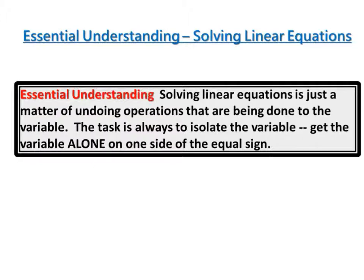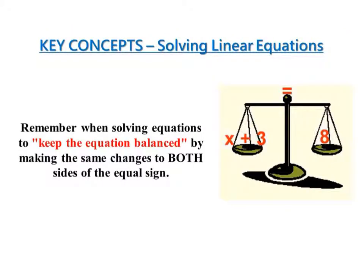What you should understand is that solving linear equations is just a matter of undoing the operations that are being done to the variable. The task is always to isolate the variable, which means to get it alone on one side of the equal sign and a number on the other. Remember when solving equations to keep the equation balanced by making the same changes to both sides of the equal sign.